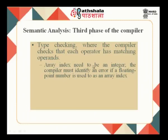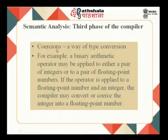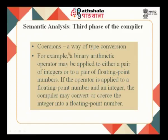Whatever errors happen from the first phase till the last phase get logged into the error handler. You also perform coercions — implicit type conversion. For example, if a is of type float and I say a * 60, I will convert 60 into 60.0. A binary arithmetic operator may be applied to either a pair of integers or a pair of floating point numbers. If the operator is applied to a floating point number and an integer, the compiler may convert or coerce the integer into a floating point number — this is called coercion.